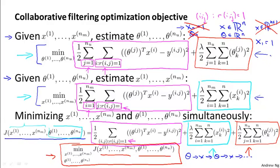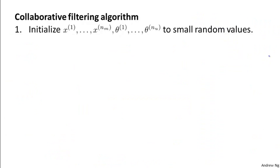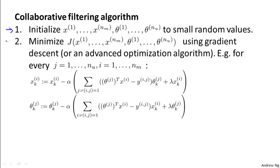Putting everything together, here's our collaborative filtering algorithm. First, we're going to initialize x and theta to small random values — this is a little bit like neural network training, where we also initialize all parameters to small random values. Next, we're going to minimize the cost function using gradient descent or one of the advanced optimization algorithms.